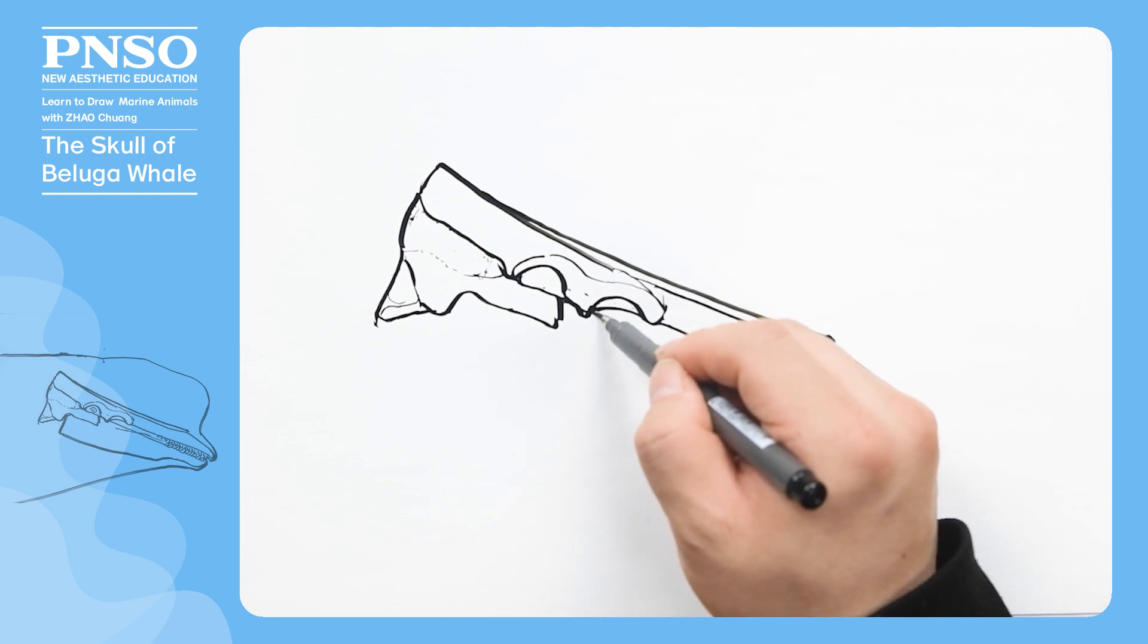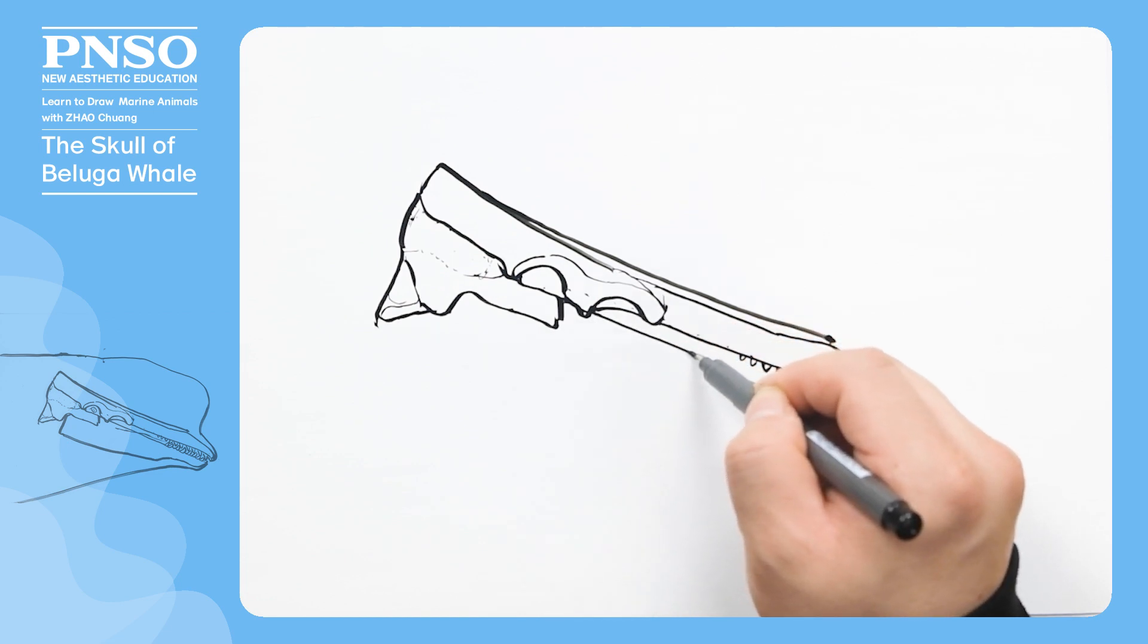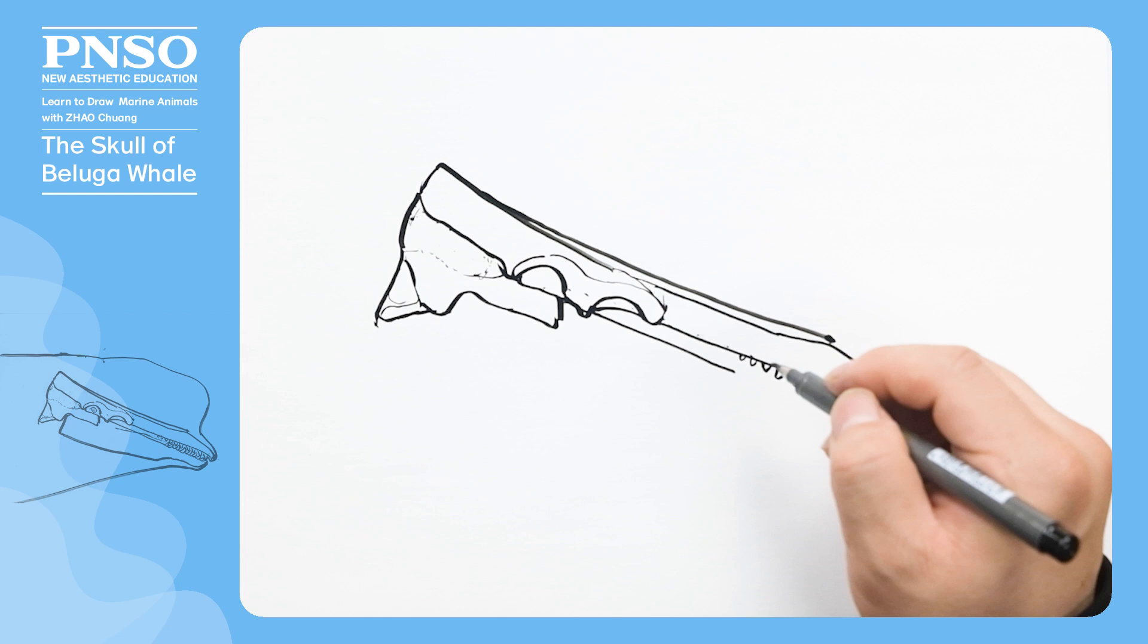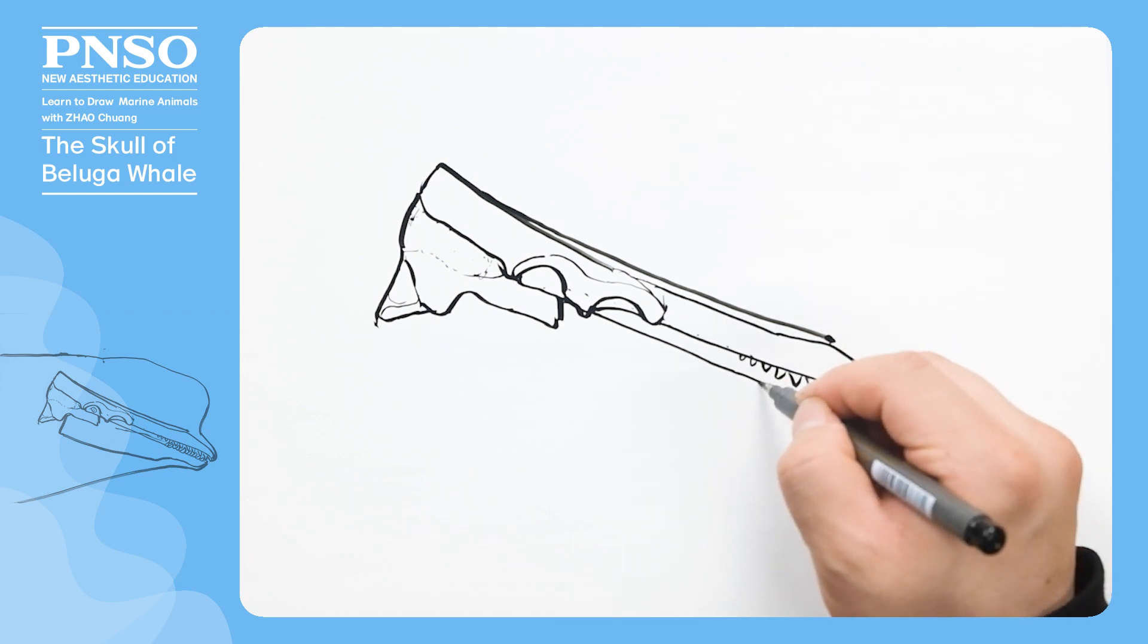Another bone in its mouth is the mandible. The mandible teeth start a little more forward than those on the upper jaw.